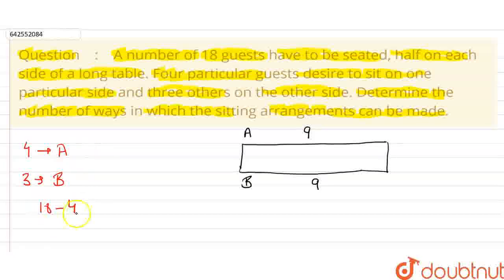4 guests are to be seated on the side A and 3 guests are seated on side B. So, we have left with 11 guests which can be seated on either side. We can arrange them on either side.